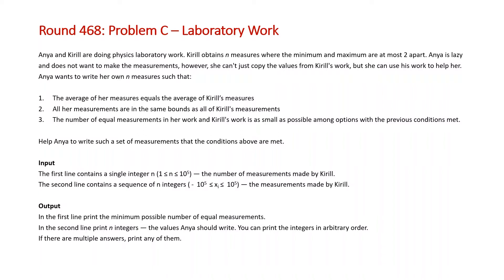Basically, this problem is saying that Kirill is making N measurements that are at most two apart — something like 1 1 1 1 1 2 3, or 1 2 2, so they'll only have a maximum difference of two. Anya also wants to write down N measurements, but wants to make her measurements as different as possible from Kirill's while maintaining that their average is the same and all her measurements are in the same bounds. She can't go outside of those bounds.